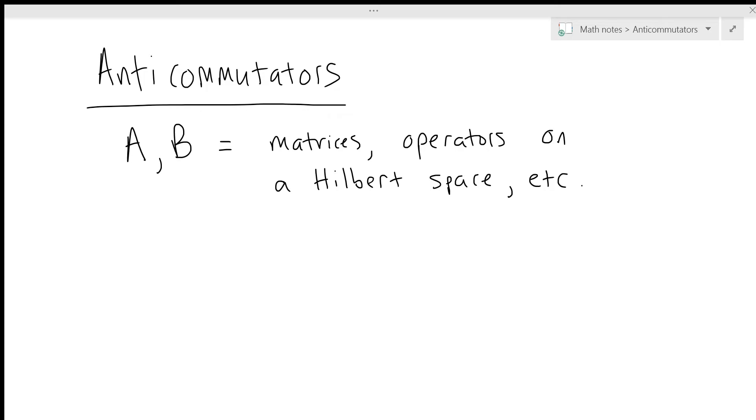Let's look at the definition of the anticommutator. It's written using curly bracket notation, {A,B}, and it's equal to the sum of A times B plus B times A.